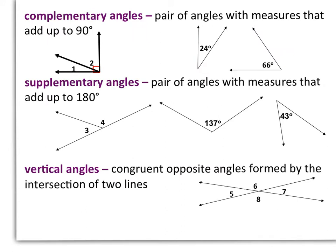We have some other types of angles. Complementary angles are a pair of angles with measures that add up to 90 degrees, and there are two examples of that below. So on the left, angle 1 and angle 2 are complementary. Their sums would add up to 90 degrees. And on the right, the two angles are also complementary.